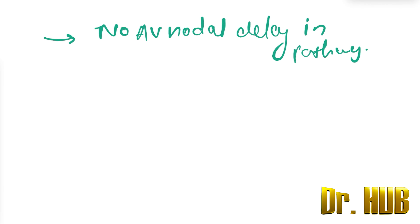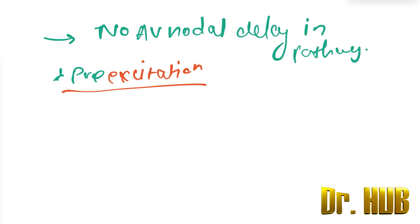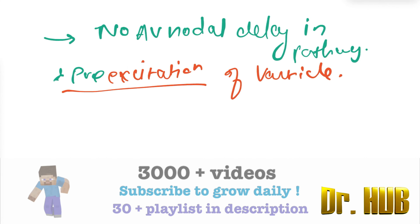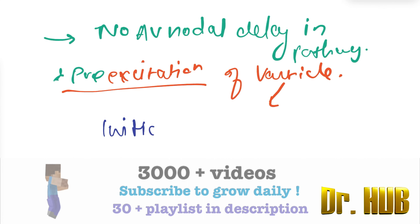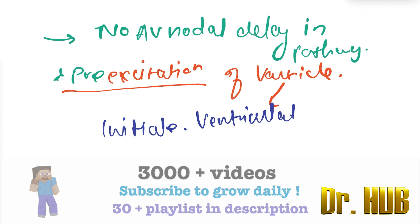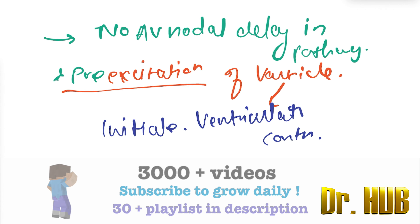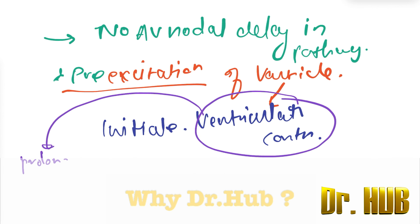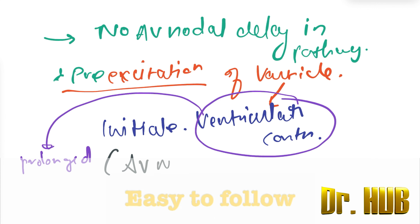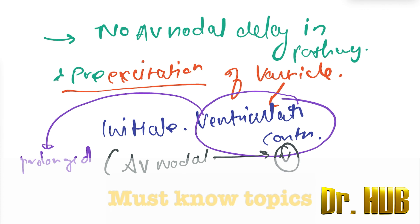This leads to pre-excitation of the ventricle, which initiates ventricular contraction. The ventricular contraction is prolonged when the impulse via the AV nodal pathway subsequently reaches the ventricles.